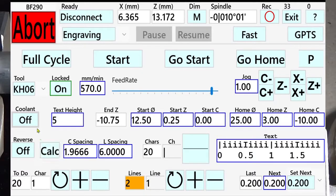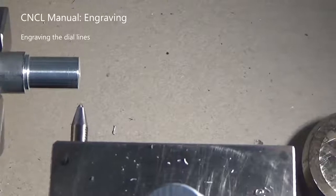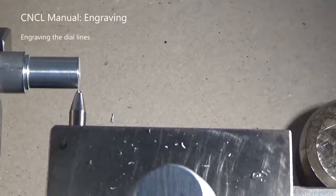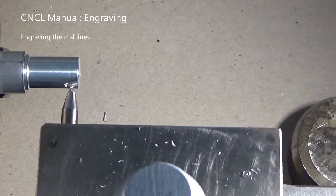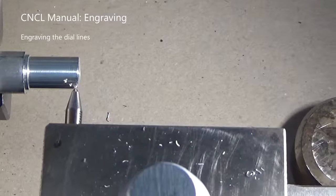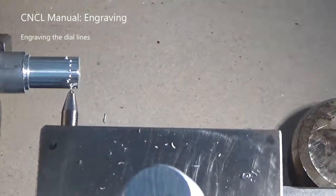When we press the calculate button, the character spacing is calculated based on the number of characters and the diameter of the workpiece, almost two millimeters. We are now ready for engraving the lines. So we press the full cycle button.